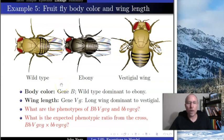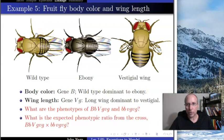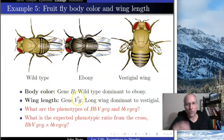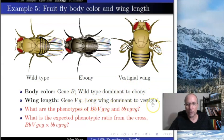Body color is determined by a gene called B, and wild type is dominant to ebony. Individuals who are big B big B or big B little b are wild type gray; little b little b is ebony. There's another gene that determines wing length called VG. The VG gene determines wing length, and long wings are dominant to vestigial. So wild type wing length can be big VG big VG or big VG little VG, and vestigial individuals must be little VG little VG.